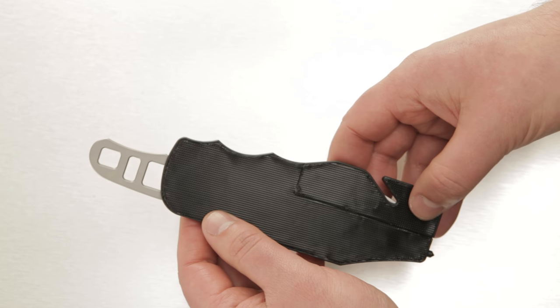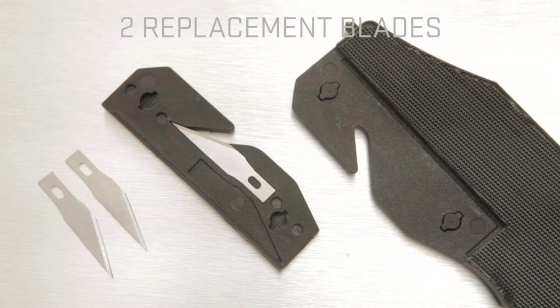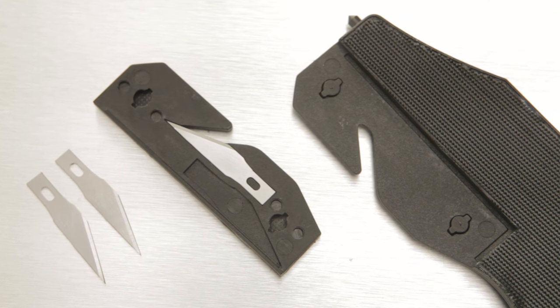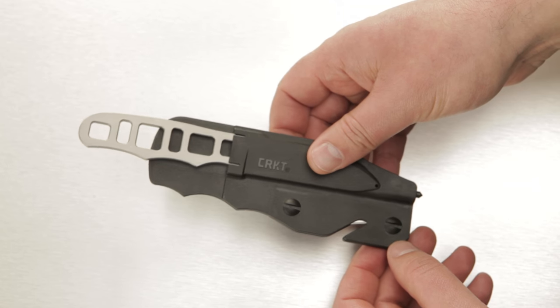The sheath features a strap cutter here and two replacement blades that are tucked into the sheath, so when you're in an emergency situation you'll never have to worry that it won't slice right through seat belts and straps quickly.